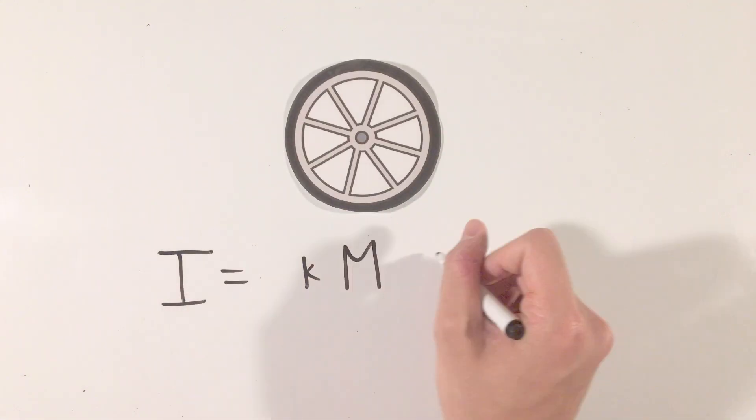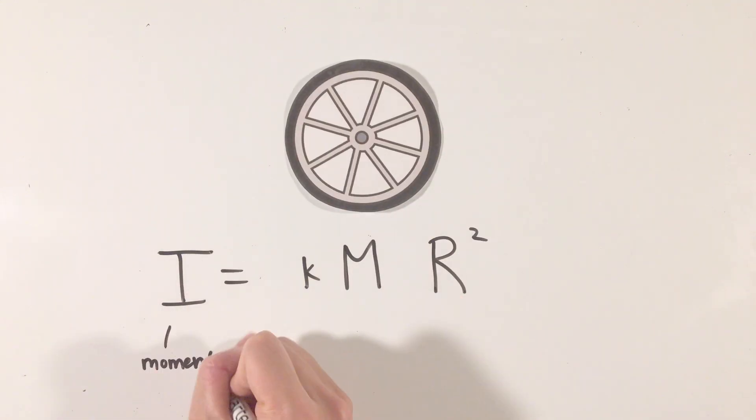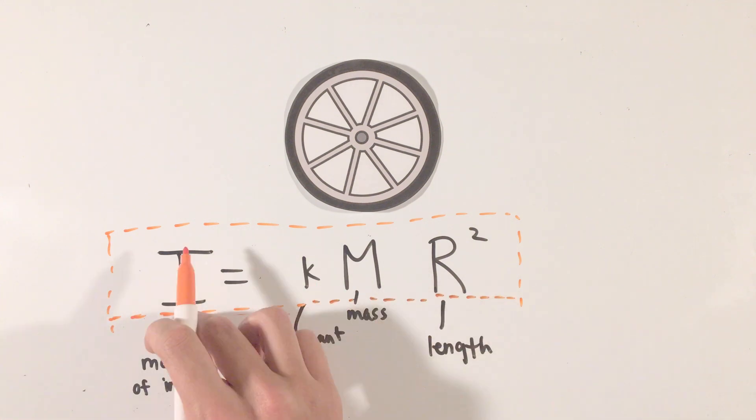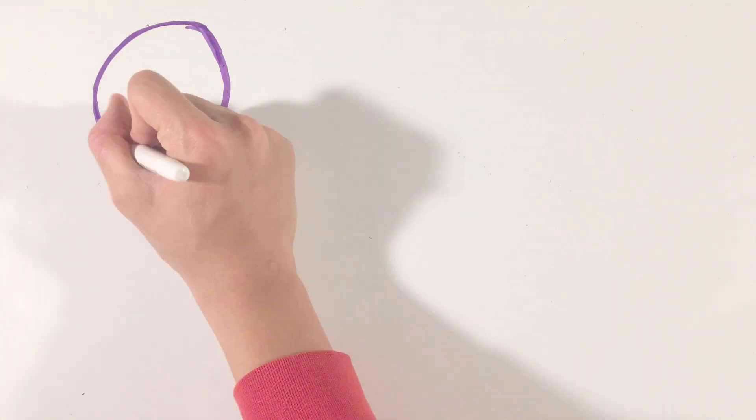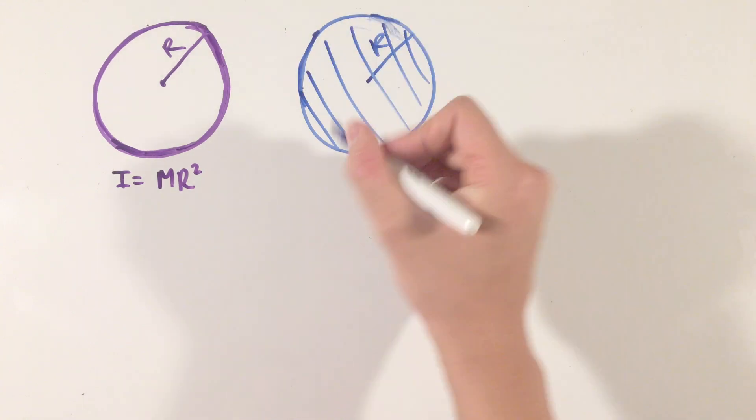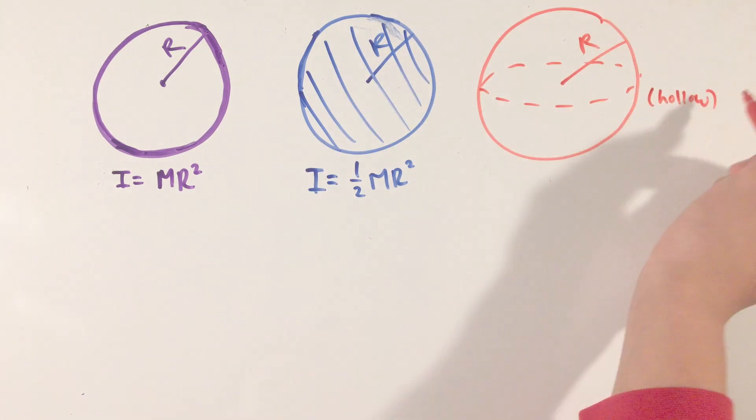But not all objects are affected identically under these torques, and for that we need to talk about another quantity called moment of inertia. Moment of inertia, denoted usually by a capital letter I, measures an object's resistance to rotation, and always comes in the form of some mass times some length squared. Now, whether this length be the radius of a circular object or the length of a rectangular one, the coefficient in front tells you how relatively easy or hard something is to rotate.